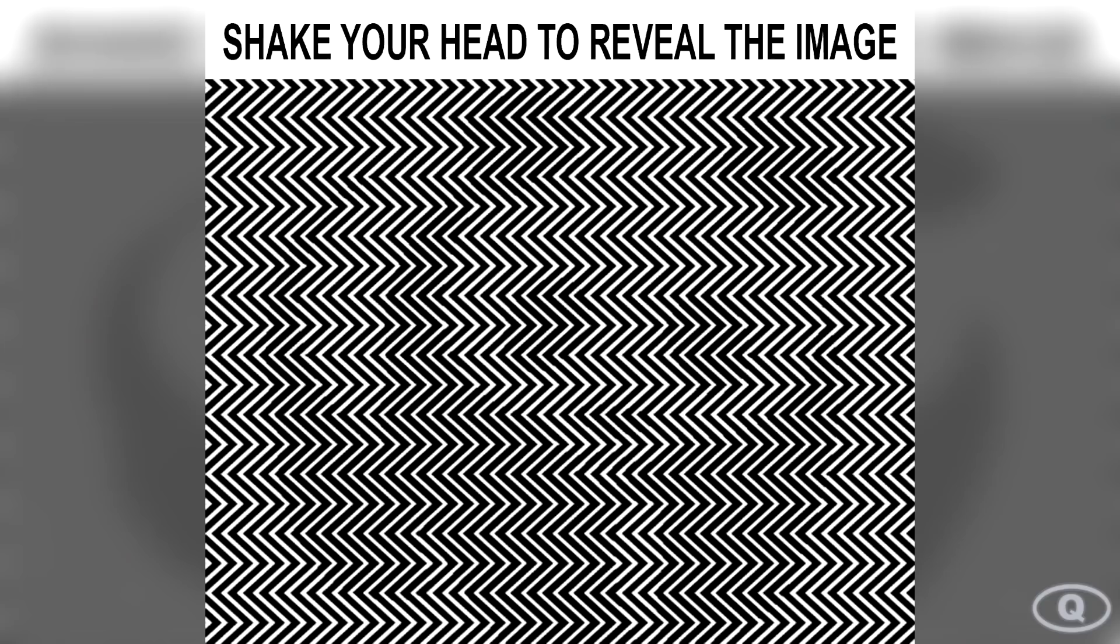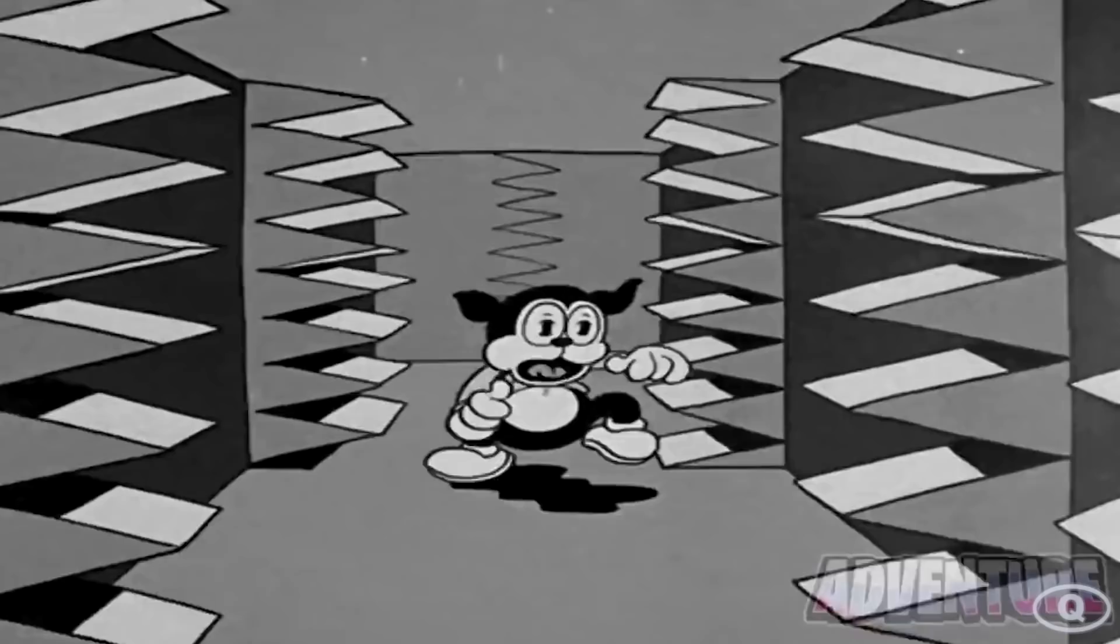There's an animal hidden in between these lines. The secret to reveal the hidden animal is to shake your head from side to side and it should reveal the animal. Go ahead and take some time to look over it and I'll reveal the hidden animal in a few moments. So the hidden animal is actually a panda. Comment down below if you got it right.